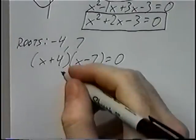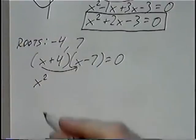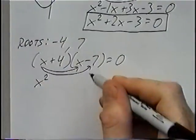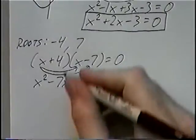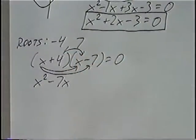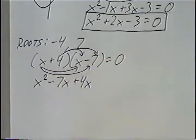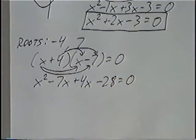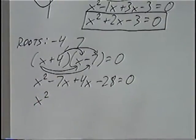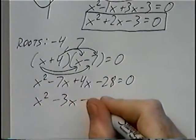Simplifying from here by FOILing: x times x would be x squared. The outside terms, x times negative 7, gives negative 7x. The inside terms give 4x. And multiplying the last numbers gives negative 28. Combining like terms, negative 7x plus 4x would be negative 3x minus 28.